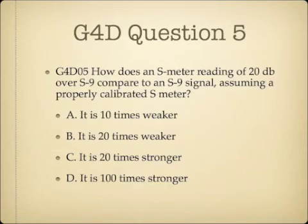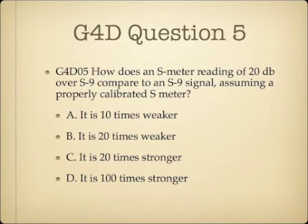Question 5. How does an S-meter reading of 20 decibels over S9 compare to an S9 signal, assuming a properly calibrated S-meter? A. It is 10 times weaker. B. It is 20 times weaker. C. It is 20 times stronger. Or D. It is 100 times stronger.